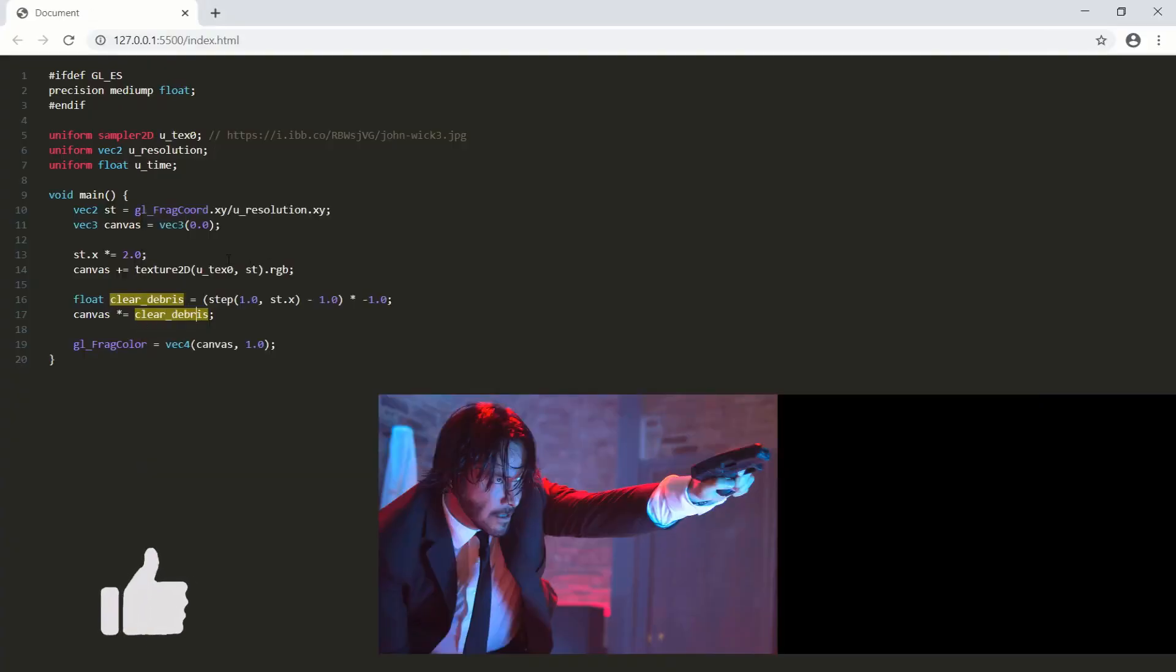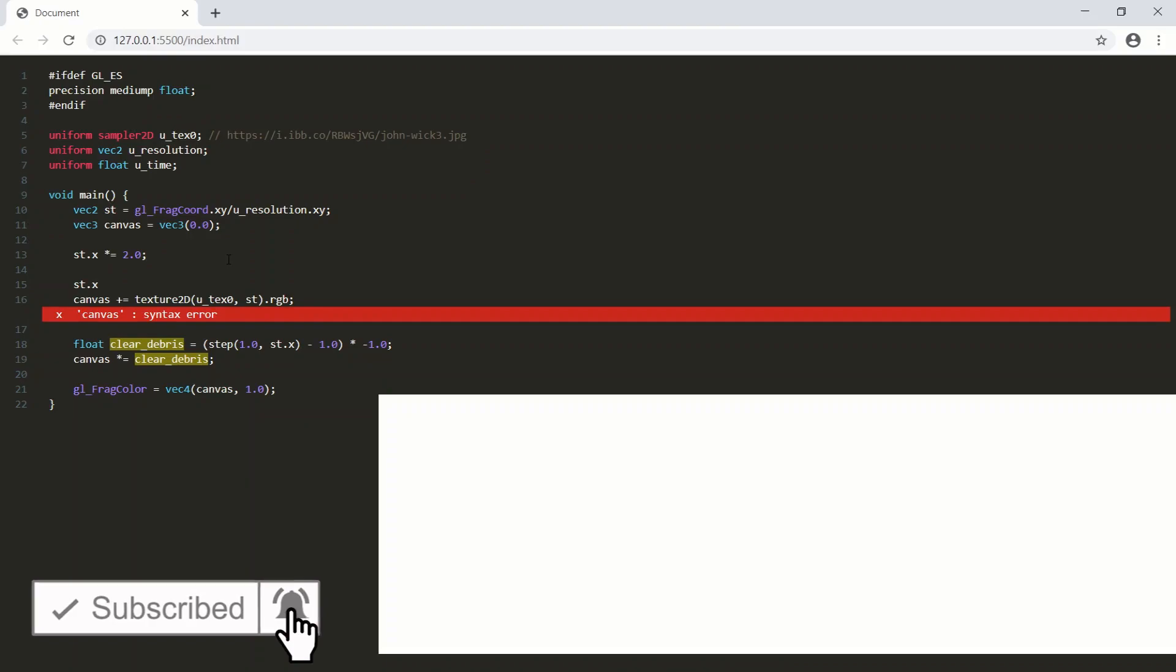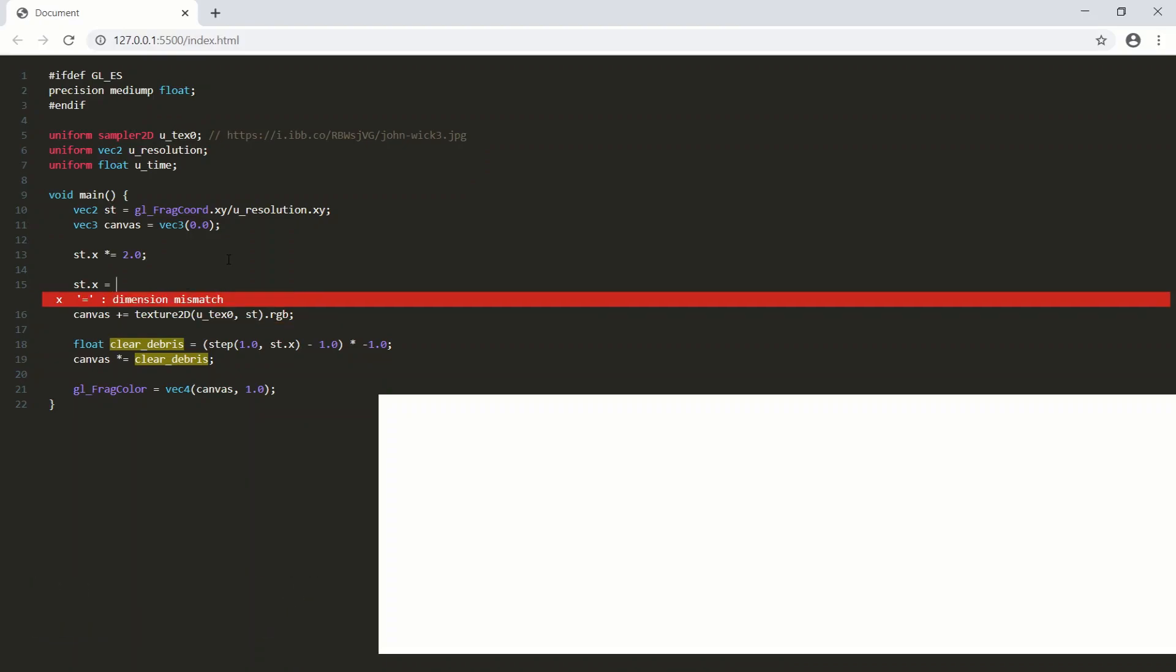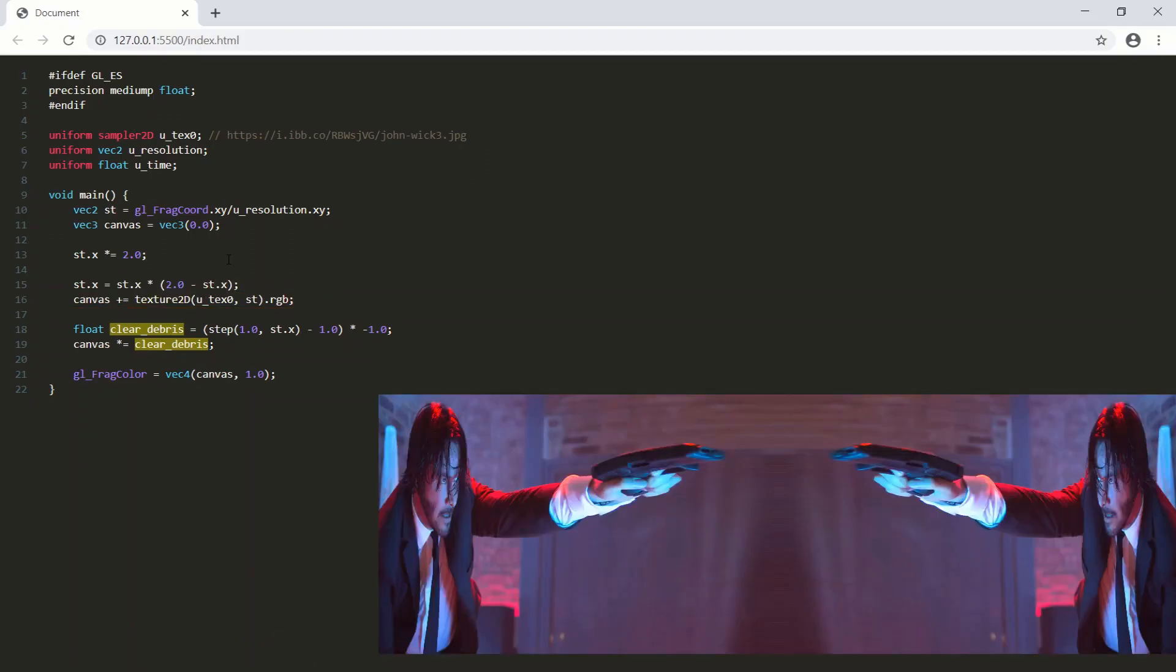So we'll just do it right here before we print the texture to the canvas. So we're going to say the mirror dimension value is equal to the original value times our max, which is 2.0 minus the original value semicolon. And just like that, we've created a mirror dimension.